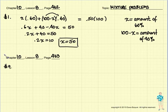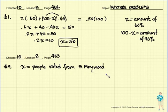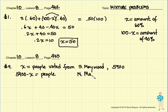Let's try number nine. Number nine talks about some folks who voted. And we're going to call these folks who voted from Southern Maywood X. So X stands for the number of voters, the people who voted from Southern Maywood. And it also tells us in the problem that there are 5,900 people total. So I guess 5,900 people minus X would be the people from North Maywood.